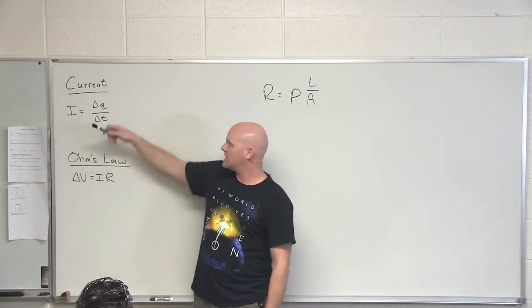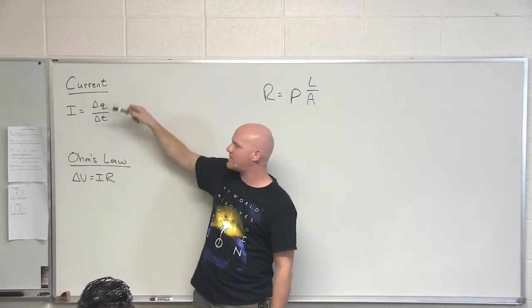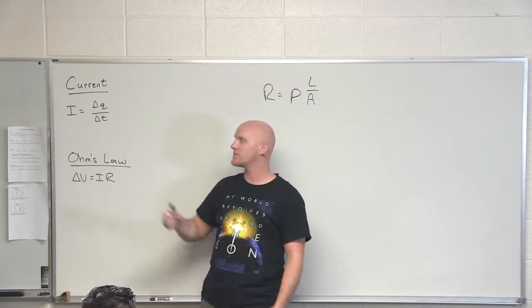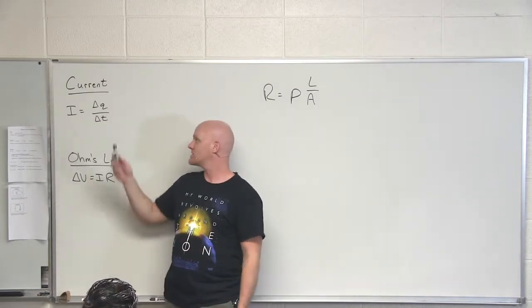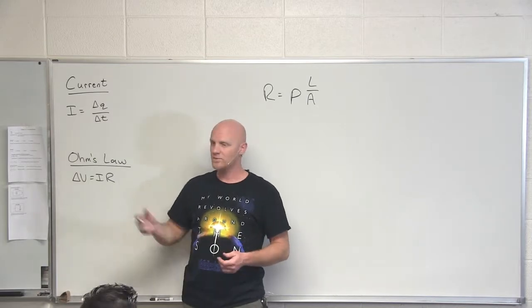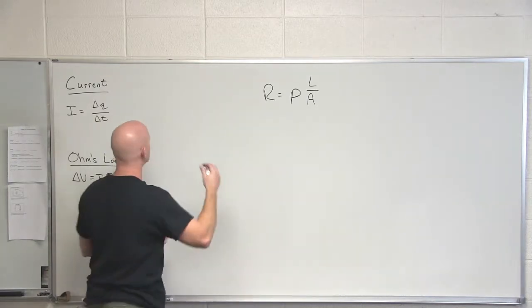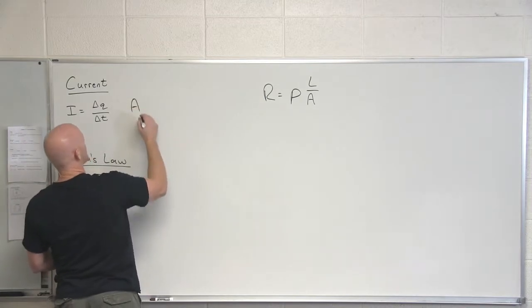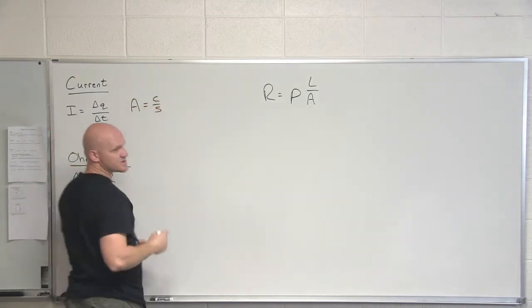I is your symbol for current, and it is simply the amount of charge that passes through a wire over a given period of time — charge per time. The SI unit for charge is coulombs, and time is seconds. A coulomb per second gets its own special term: the ampere, or amps for short. That is your coulomb per second.